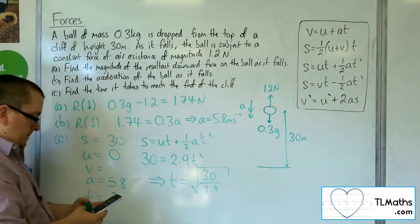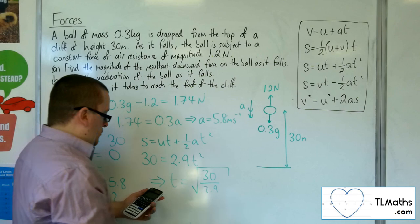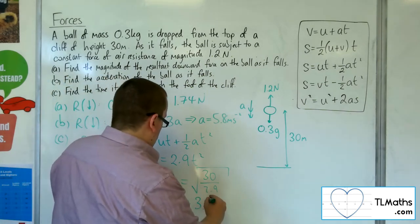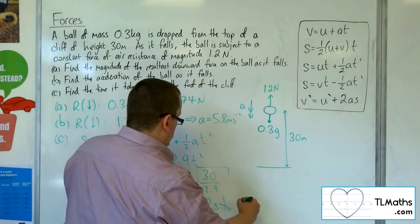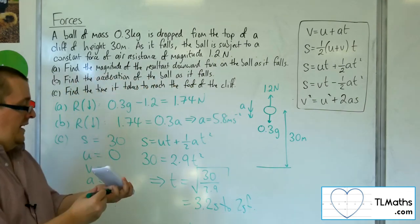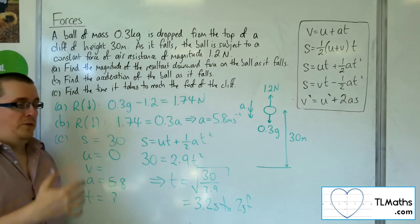So t is the square root of 30 over 2.9, which is 3.2163, so 3.2 seconds to two significant figures. That's how long it takes for the ball to drop to the ground from the top of the cliff.